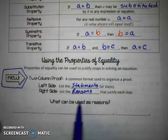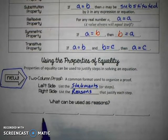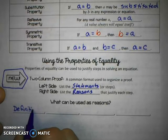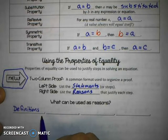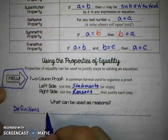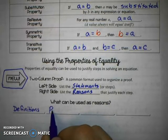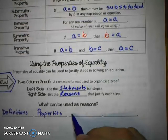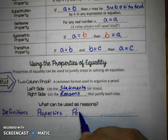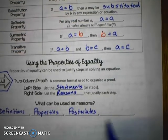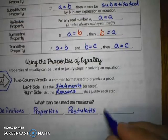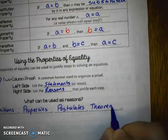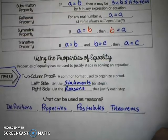So, reasons that justify a step, there's only a certain set of things we can use. Any mathematical definition can be used as a proof. Properties, like these properties of equality that we've just listed, can be used as a reason in a proof. And then, you'll remember we talked about the word postulate a few lessons ago. Postulates can be used as proofs, like the angle addition postulate or segment addition postulate. But then also, we can use what are called theorems. And we're going to look at those more later on. So, these are the things we can use as reasons of a proof.